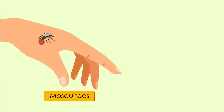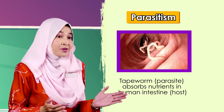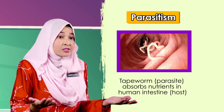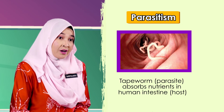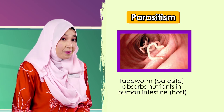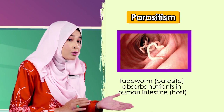Parasites such as lice and bed bugs are examples found outside the organism's body. Tapeworms and roundworms are parasites found inside the organism's body. Parasites get food from their host in order to survive while at the same time causing harm to their host. This relationship between a parasite and its host is called parasitism — it is a win-lose interaction.